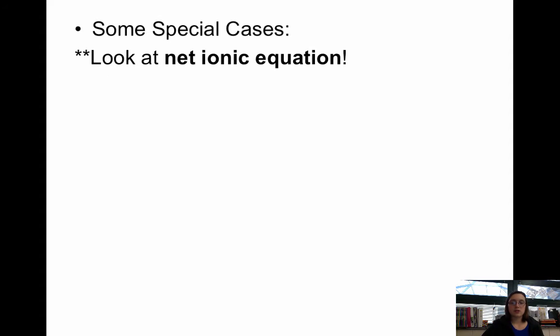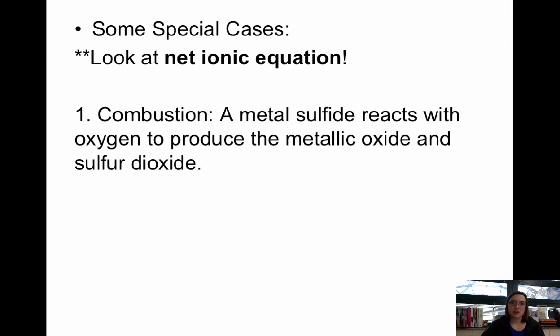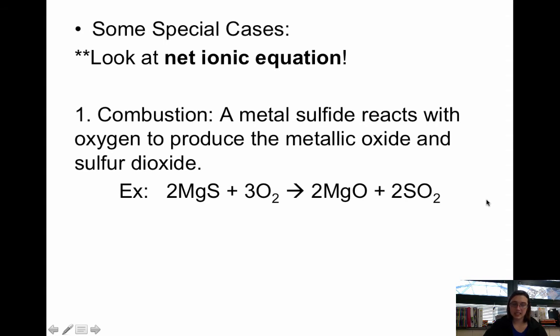Here are some special equations that you need to know. Look at the net ionic equation to make sure you understand why it's redox. Combustion reactions. If you have a metal sulfide, like magnesium sulfide, and it reacts with oxygen, it makes the metallic oxide and SO2. Here's the difference between combustion that you're used to. This is normally a hydrocarbon. Normally we have C and H, and it forms H2O and CO2. Well now we just have a metal sulfide instead. So this is now Mg and O, and then S and O2 together. This is redox.